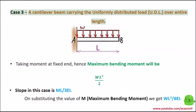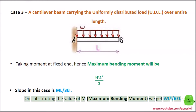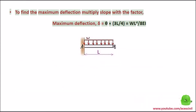Case 3: A cantilever beam carrying the uniformly distributed load (UDL) over its entire length. Taking moment at the fixed end, the maximum bending moment will be WL² / 2. Slope in this case is WL³ / 6EI. On substituting the value of M (maximum bending moment), we get WL³ / 6EI. To find the maximum deflection, multiply slope with the factor: maximum deflection D = θ × (3L / 4) = WL⁴ / 8EI.